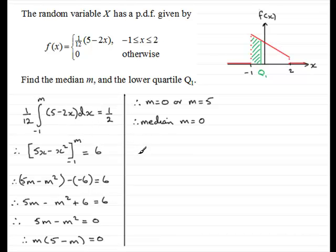What we've got then is for Q₁, we've got that the integral of f(x) dx, so that's going to be one twelfth again of the integral of (5 - 2x) with respect to x, has to equal a quarter, and that's going between the lower limit which in this example is minus one up to Q₁.